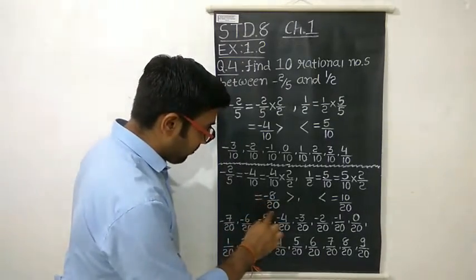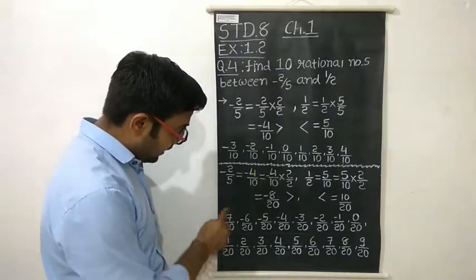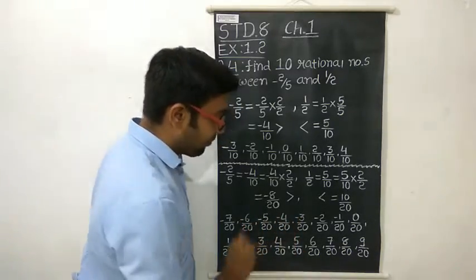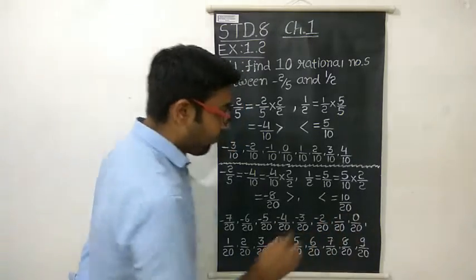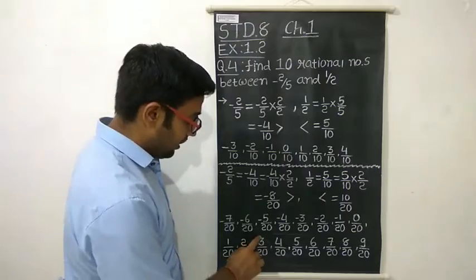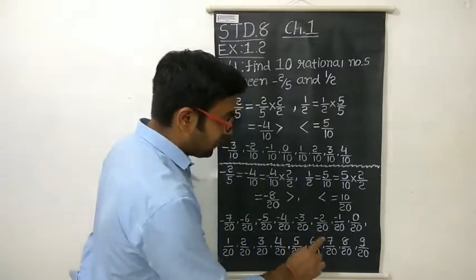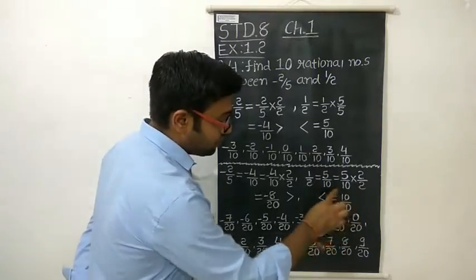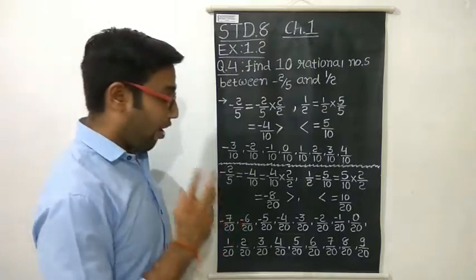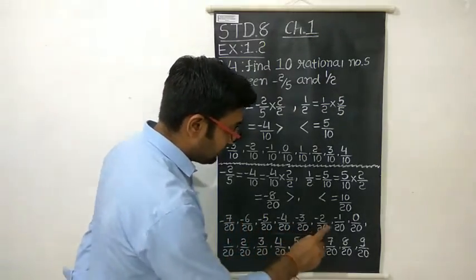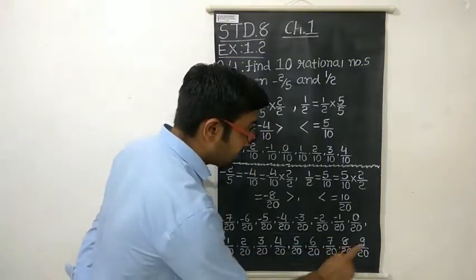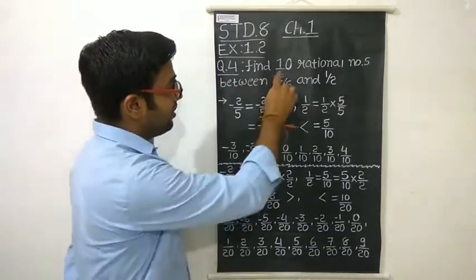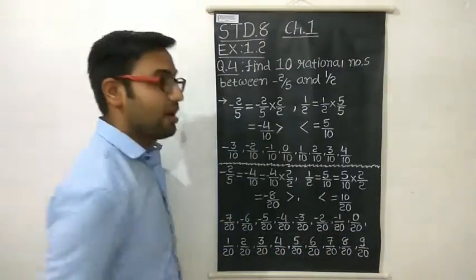Now we find numbers greater than minus 8/20 and less than 10/20. These are: minus 7/20, minus 6/20, minus 5/20, minus 4/20, minus 3/20, minus 2/20, minus 1/20, 0/20, 1/20, 2/20, 3/20, 4/20, 5/20, 6/20, 7/20, 8/20, and 9/20. Counting these: 1, 2, 3, 4, 5, 6, 7, 8, 9, 10, 11, 12, 13, 14, 15, 16, 17 — we get 17 numbers. The question asks for 10, so you can choose any 10 numbers from these.